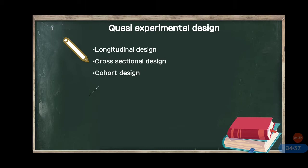Longitudinal method is lengthy. In cross-sectional we can study multiple variables if we want — for example vocabulary, IQ, and motor development — so we can test various variables. But in longitudinal design we keep the same variables. And cross-sectional method is cheaper than longitudinal design.